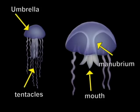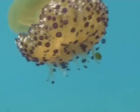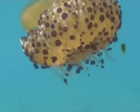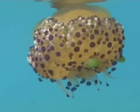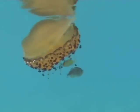The manubrium is a tubular structure hanging from the center of the umbrella, ending with an opening which acts as both mouth and anus. The jellyfish of this video belong to the phylum Cnidaria and the class Scyphozoa.